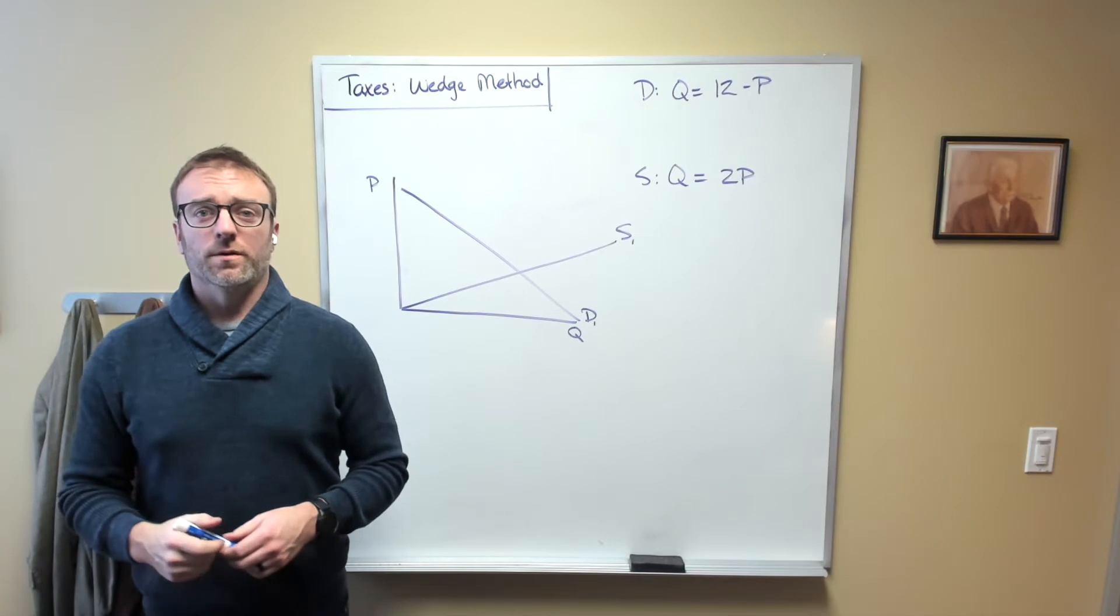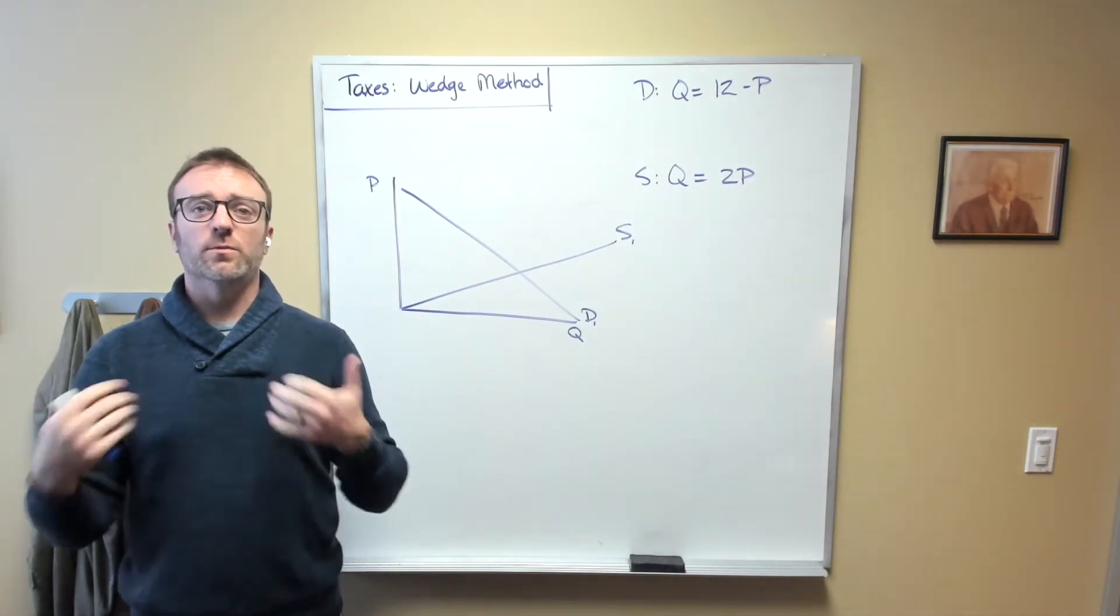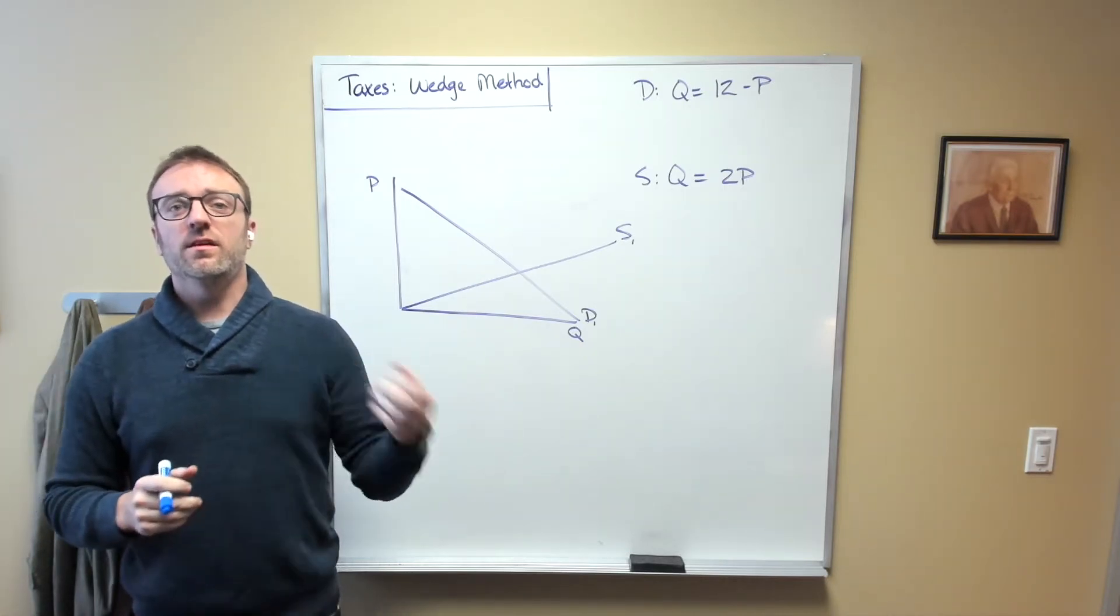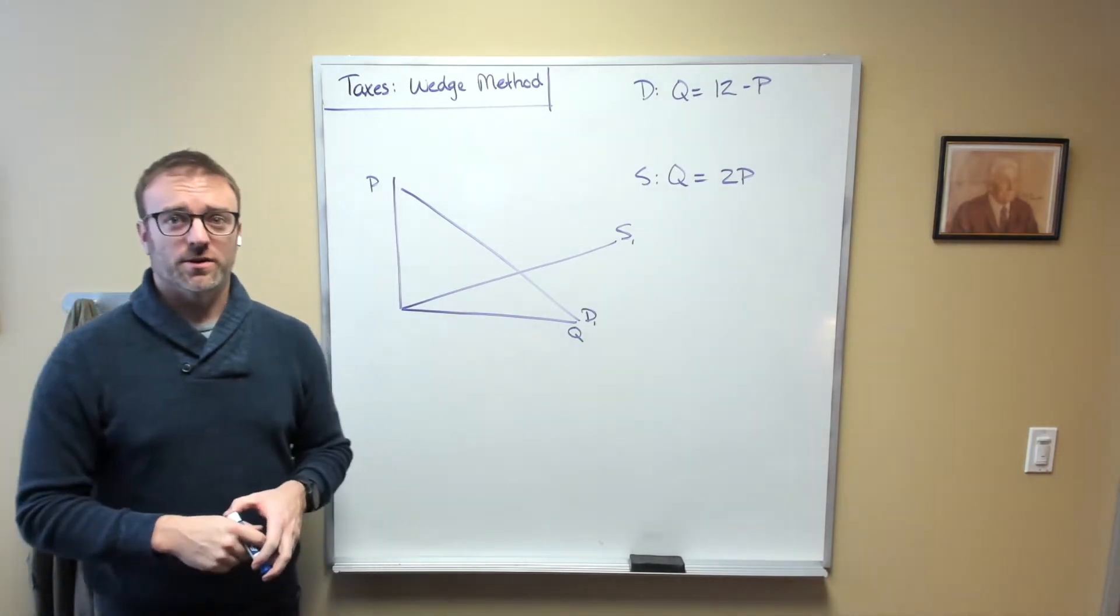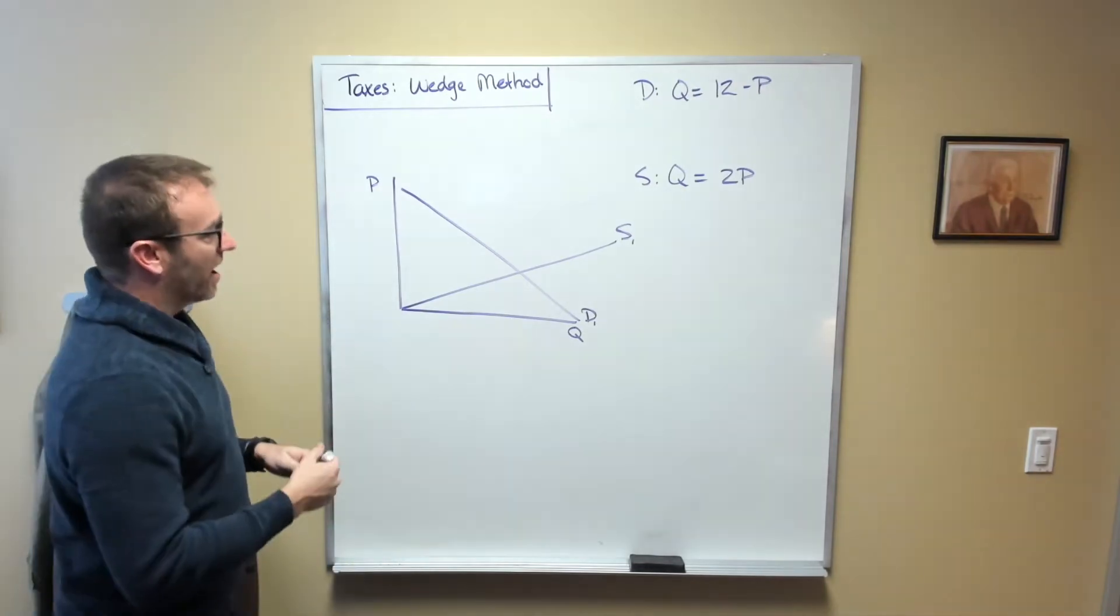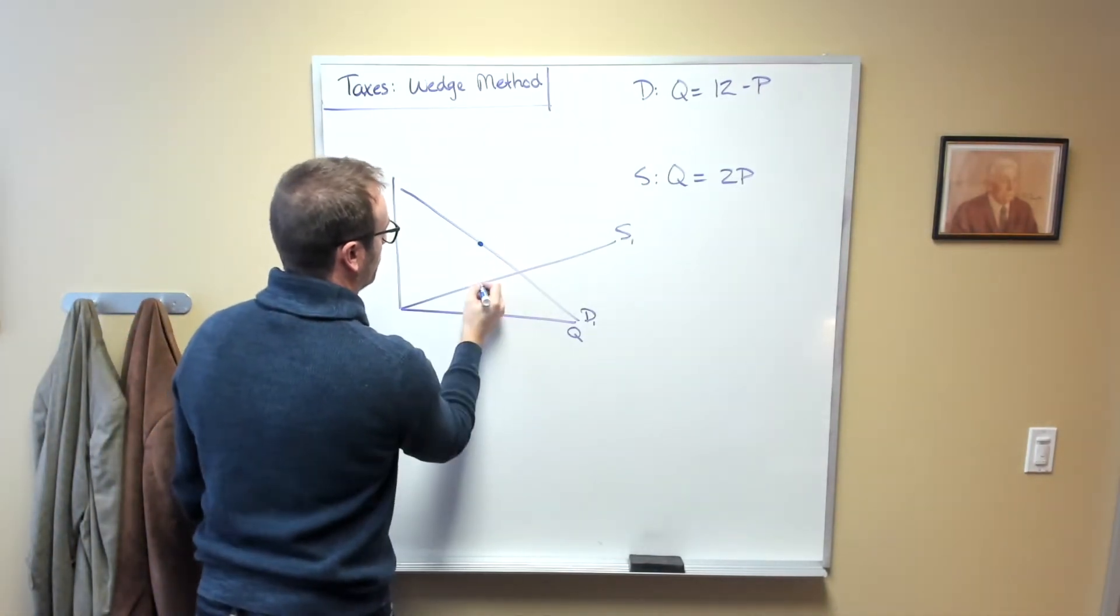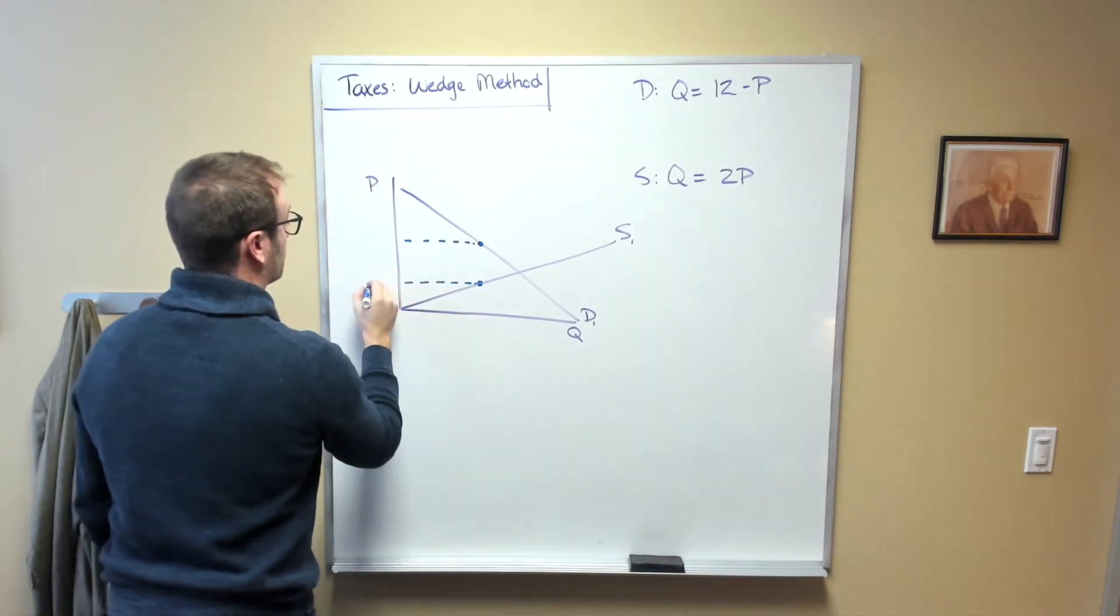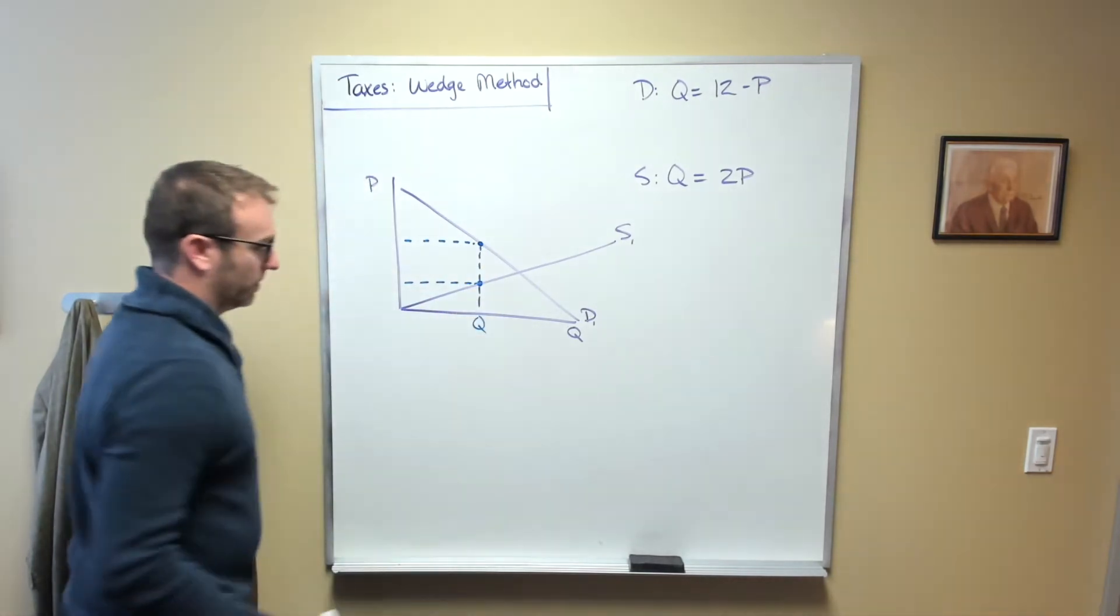Now that we've gone through taxes on both consumers and producers, and we've shown that no matter who you place the tax on, the economic effect will be the same, we're ready to look at perhaps an easier way to solve tax problems. Placing a tax introduces a wedge between the prices that consumers pay and the prices that producers get to keep. However, the quantity remains the same.